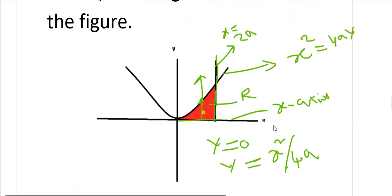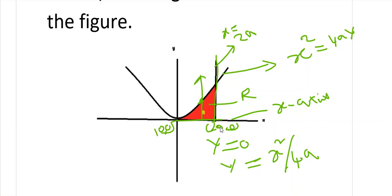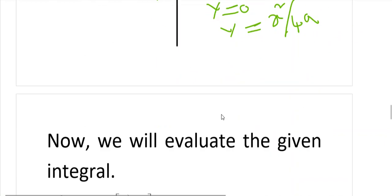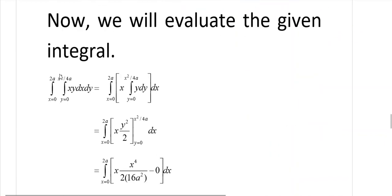For the x limits, the point of intersection with the origin is (0, 0) and the other boundary point is (2a, 0). Observing along the x-axis, x varies from 0 to 2a. So x limits are 0 to 2a. We will first integrate with respect to y, then integrate with respect to x.